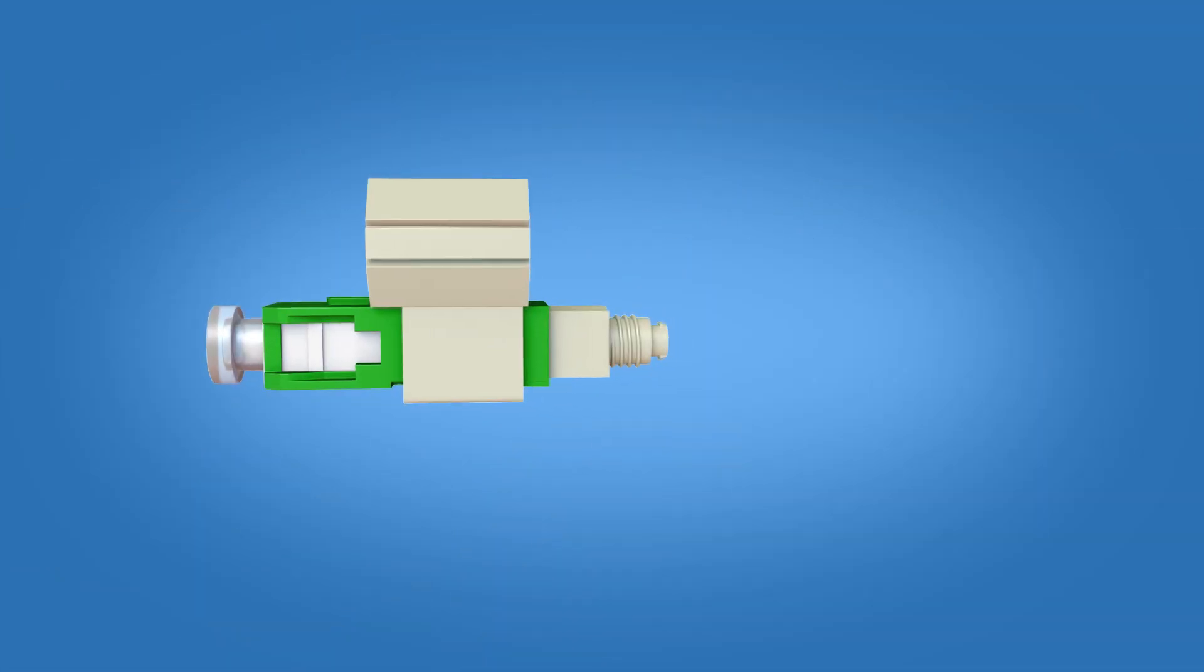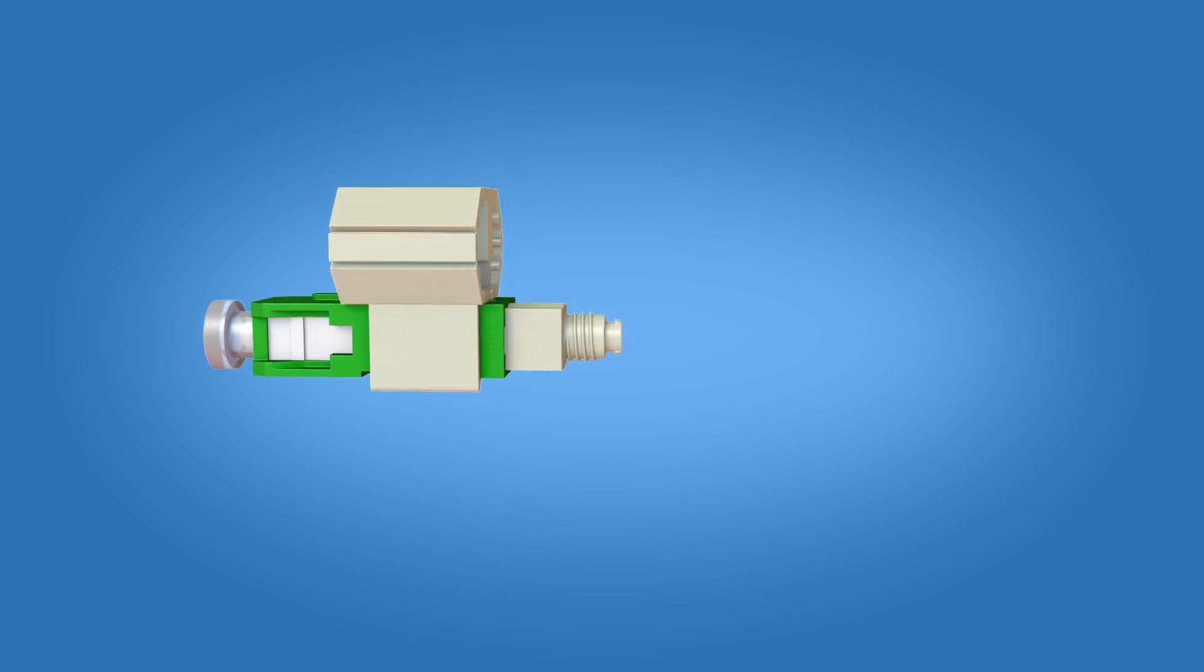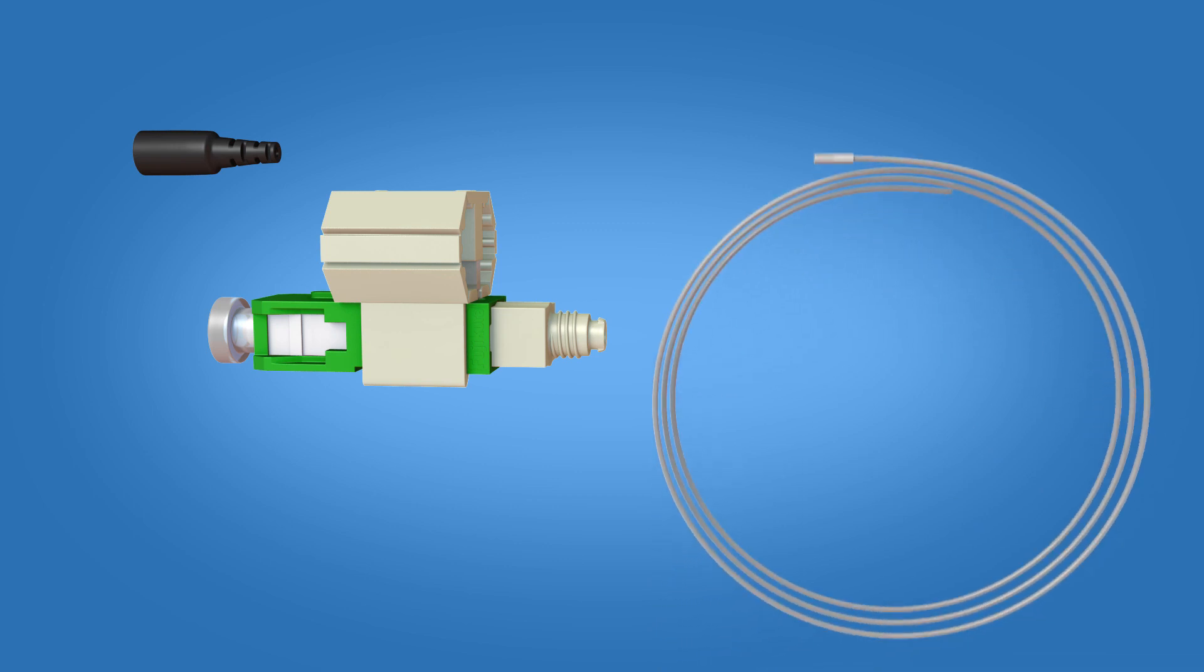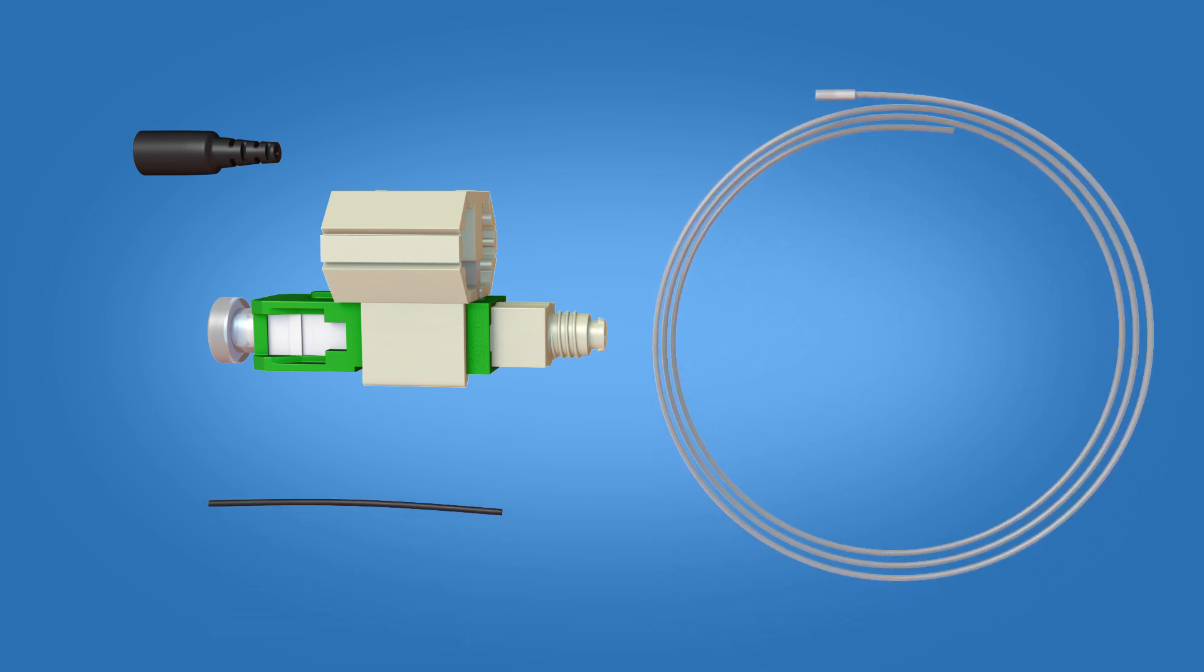The Fast SC APC Connector Kit contains the following items: a 900 micron boot, clear protective tubing, black 900 micron tubing, and a Fast SC APC Connector.